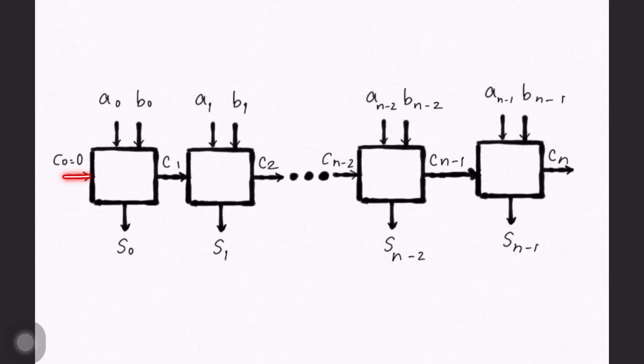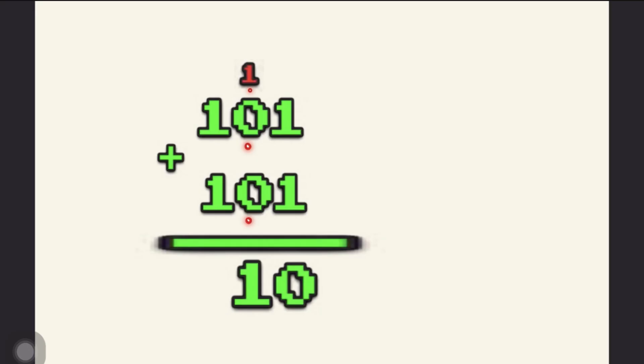Notice that the carry signals connect one unit to the other unit, just like how carries connect one column to another column when we perform addition by hand.